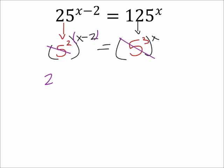So I really have 2 times x minus 2, and this would equal 3 times x right here, so 3x.